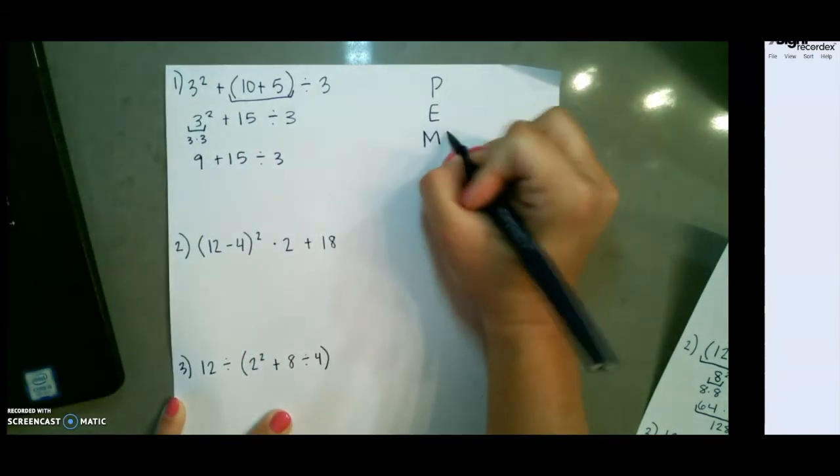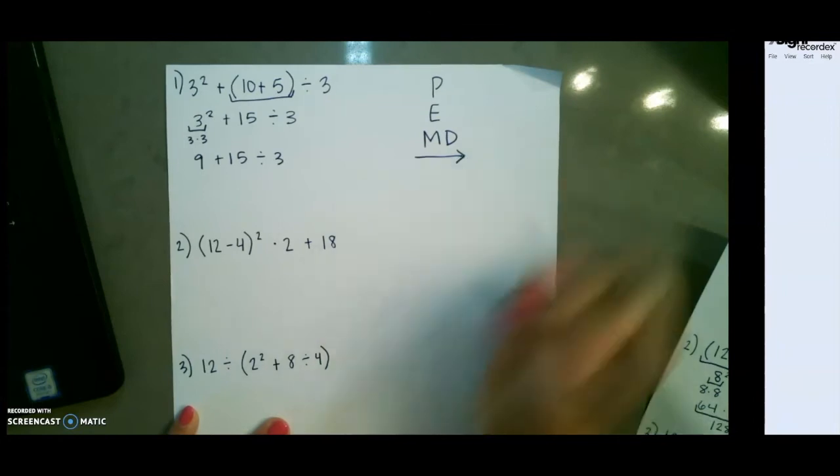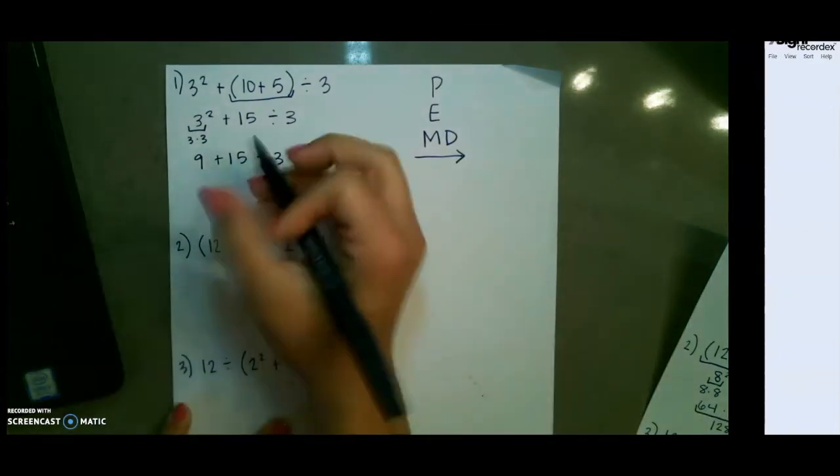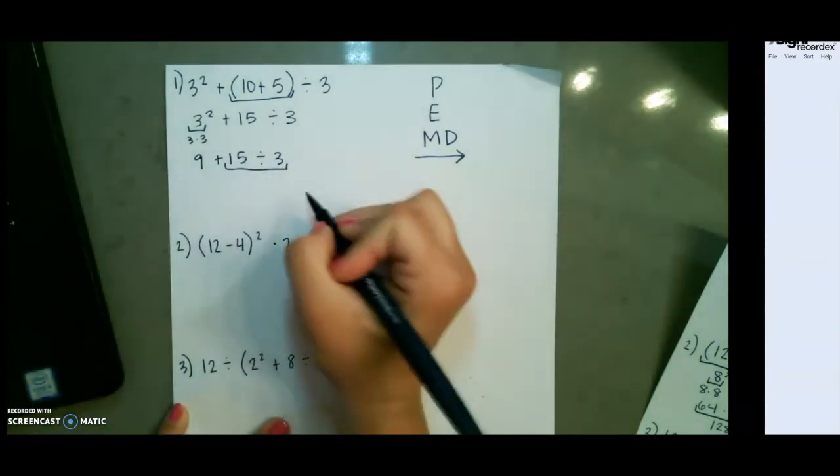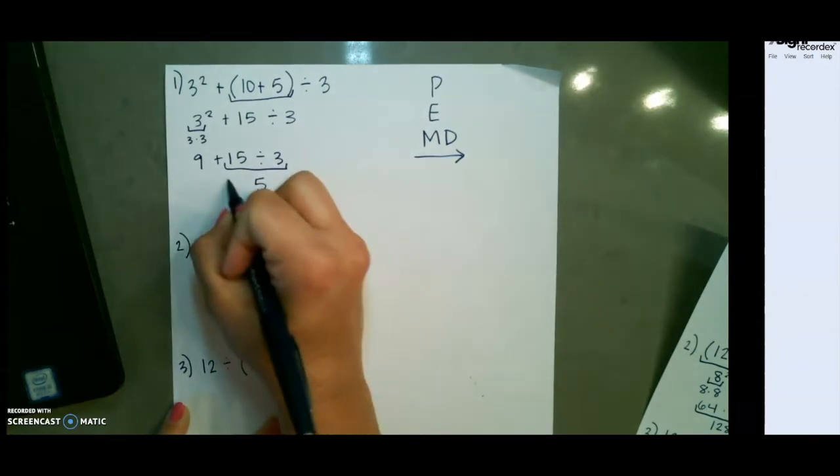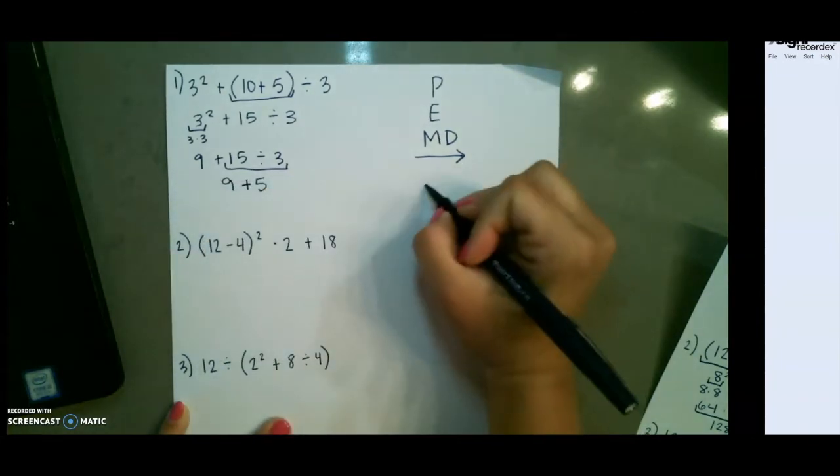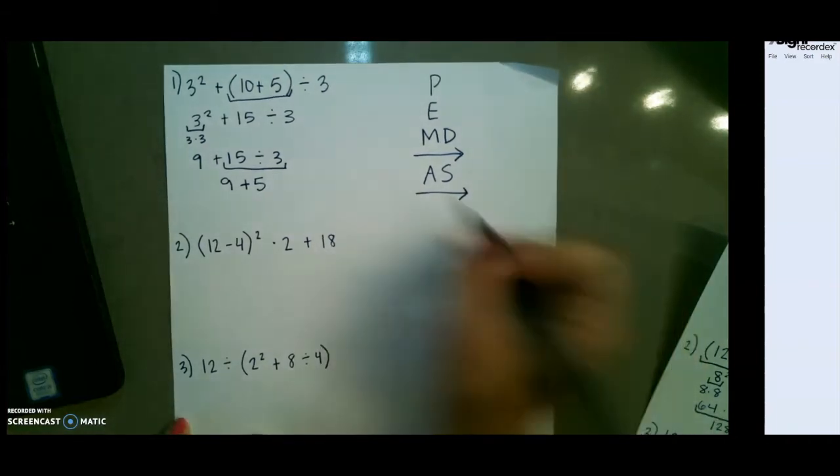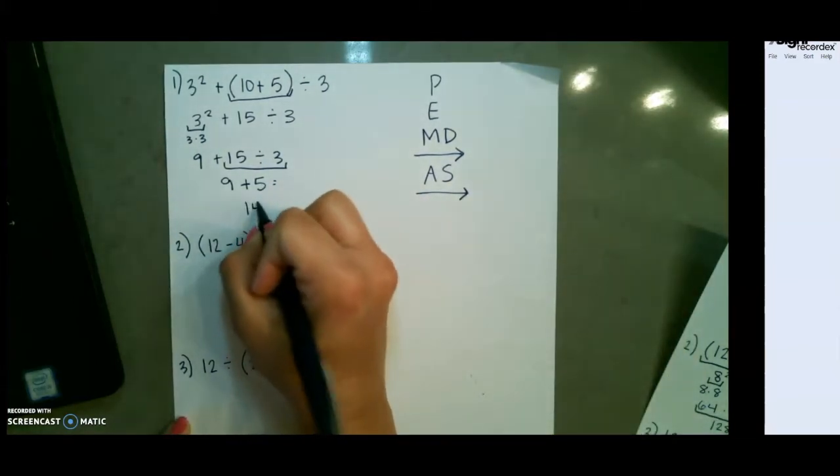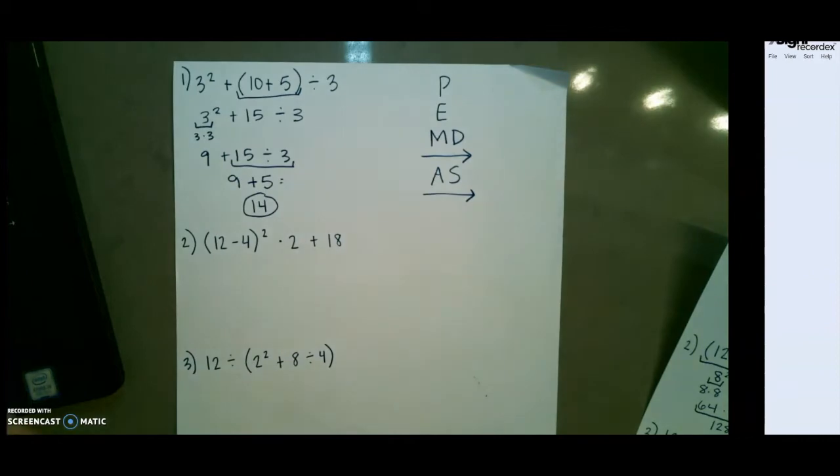Next, we have multiplication and division in order from left to right. We only have one, so we do 15 divided by 3, which is 5. And last, addition and subtraction, which gives us 14 for our final answer.